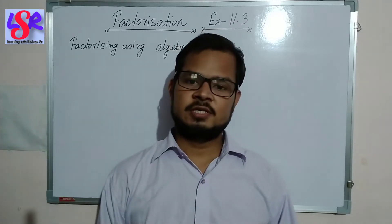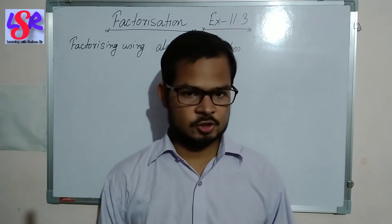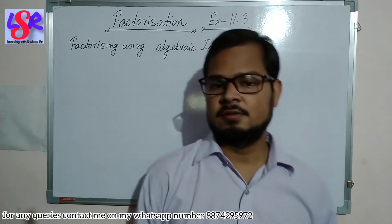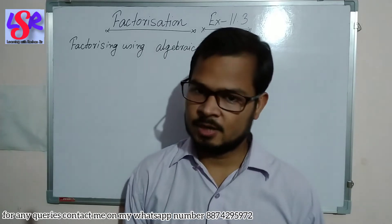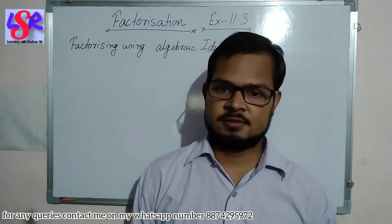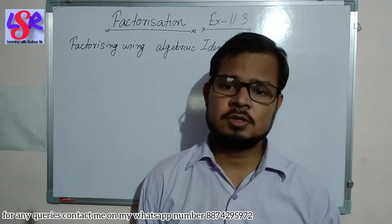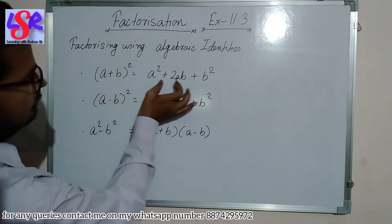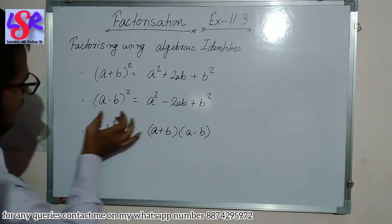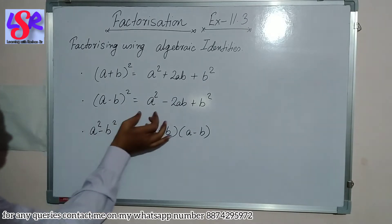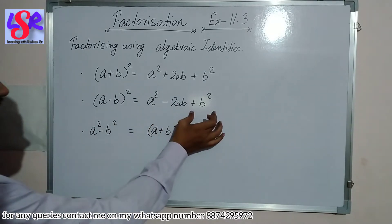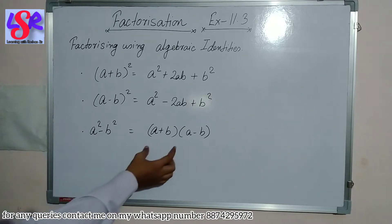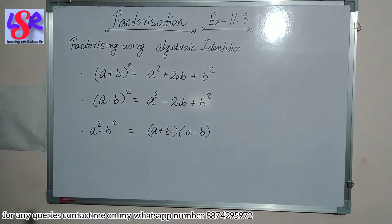Hello everyone. Here we are going to start with exercise 11.3 of the chapter factorization. In this exercise we will be factorizing the given expressions with the help of algebraic identities. The identities we are going to use are: (a+b)² = a²+2ab+b², (a-b)² = a²-2ab+b², and a²-b² = (a+b)(a-b).